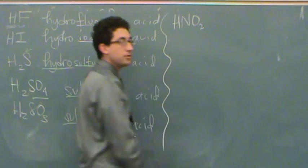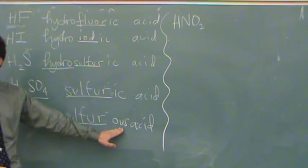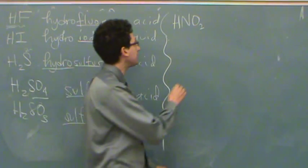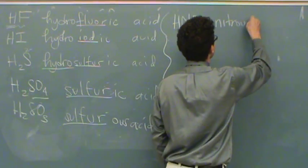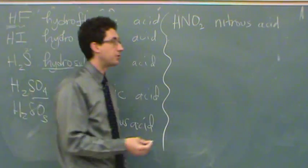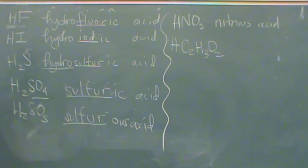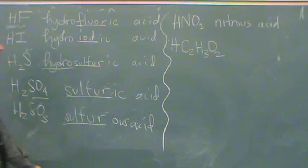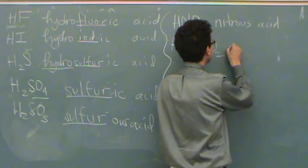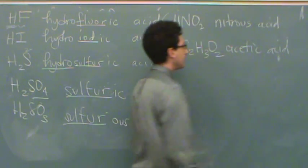If you see HNO2, you look: it's ternary, it's an acid, and NO2 is nitrite. So it's going to be nitrous acid, because the -ite changes to -ous. And you have your oddball ones you don't see all the time, like C2H3O2, which is acetate. So now you're going to change it to acetic acid.